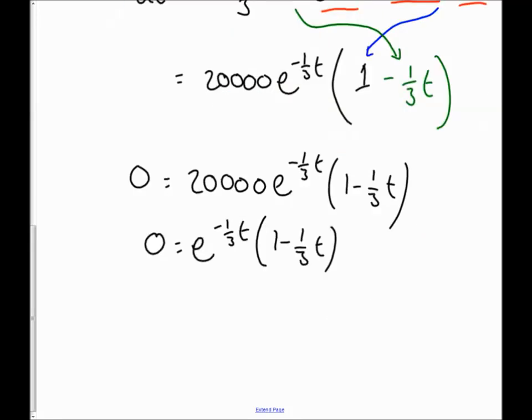And then because I've got two things multiplied together, I've got this thing and this thing being multiplied together and getting zero, I know that either one of them must be zero. So I know that either e to the minus a third t must be zero or one minus a third t must be zero.